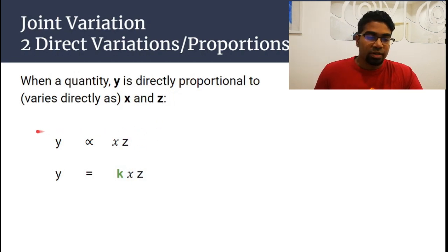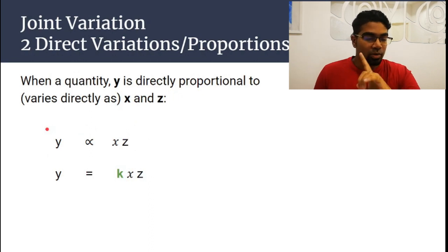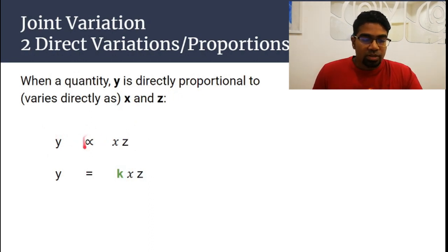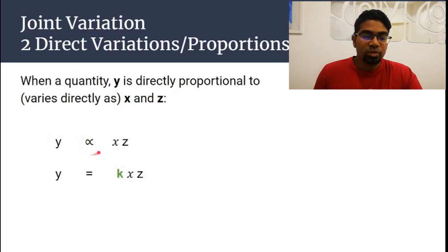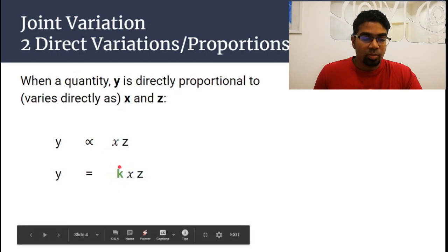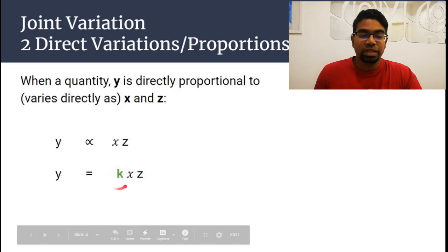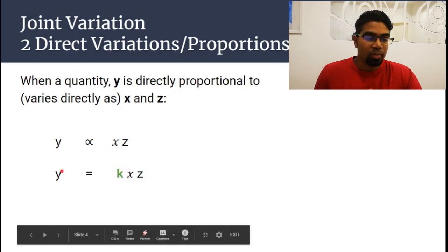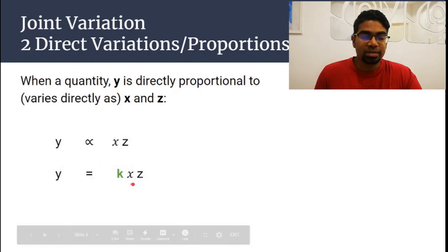This is how we write it. If you haven't seen the direct variations video, the link is at the corner of the video. This is a proportional-to sign. So we write it as y is proportional to x multiplied by z. And then, when we want to make it into an equation, we need to add the constant of proportionality, or the variation constant k. So it will become y equals to kxz.